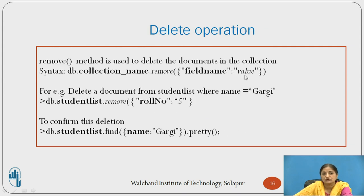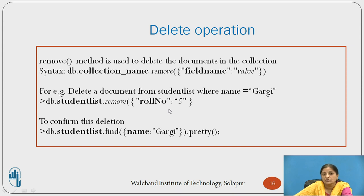The delete operation is used to delete documents in a collection. db.collectionname.remove() is the method used. For example, to delete a document from student_list where name equals 'Gargi', use db.studentlist.remove({name: 'Gargi'}) — or you can specify role_number: 5 as the condition. To confirm the deletion, use db.studentlist.find({name: 'Gargi'}).pretty().